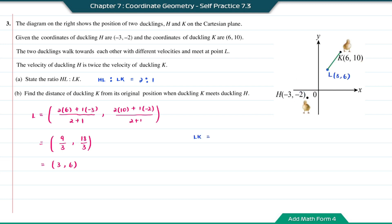To find the distance LK, it will be the square root of (6 minus 3) squared plus (10 minus 6) squared. This will equal the square root of 25. So the distance LK will equal 5 units.